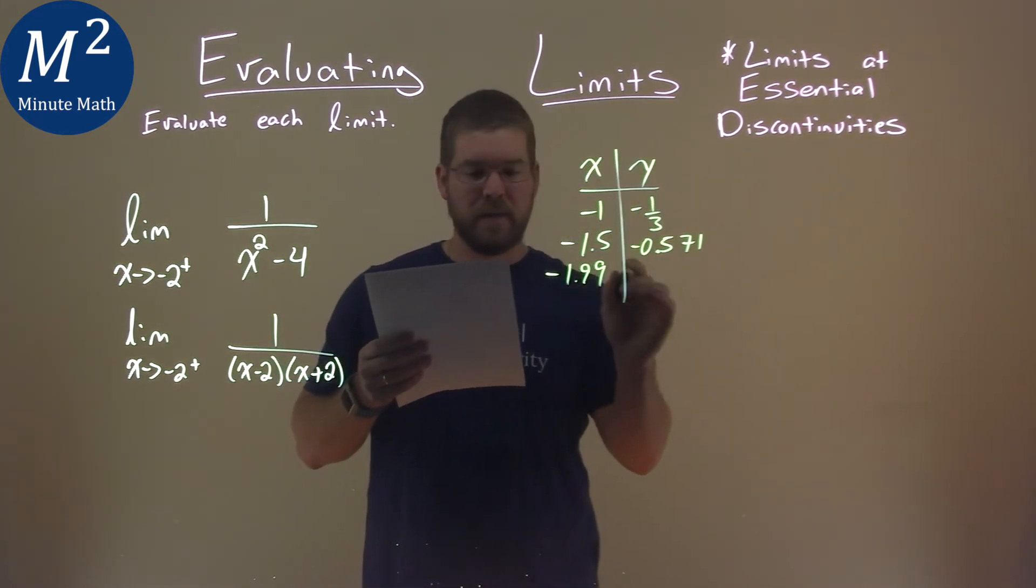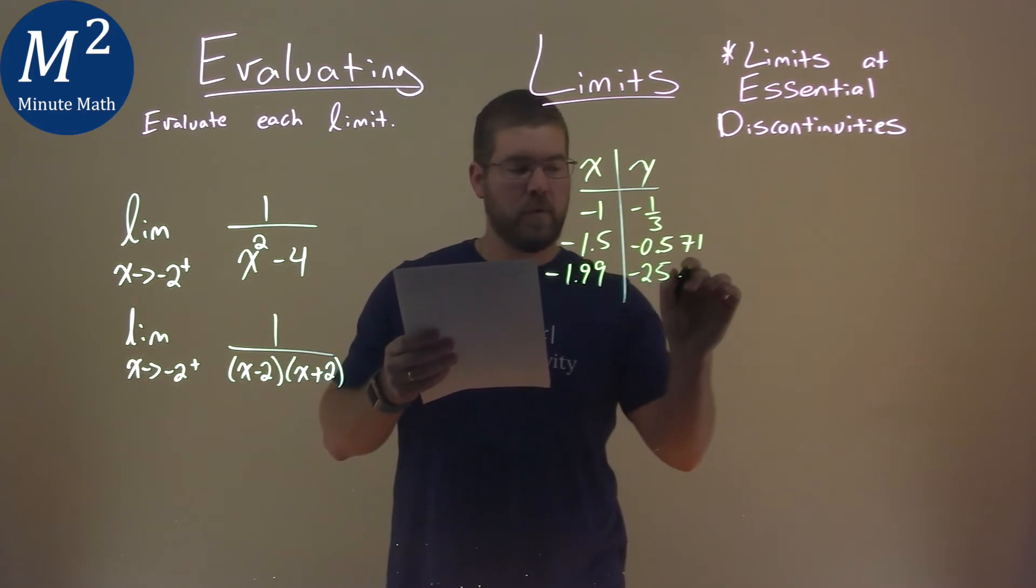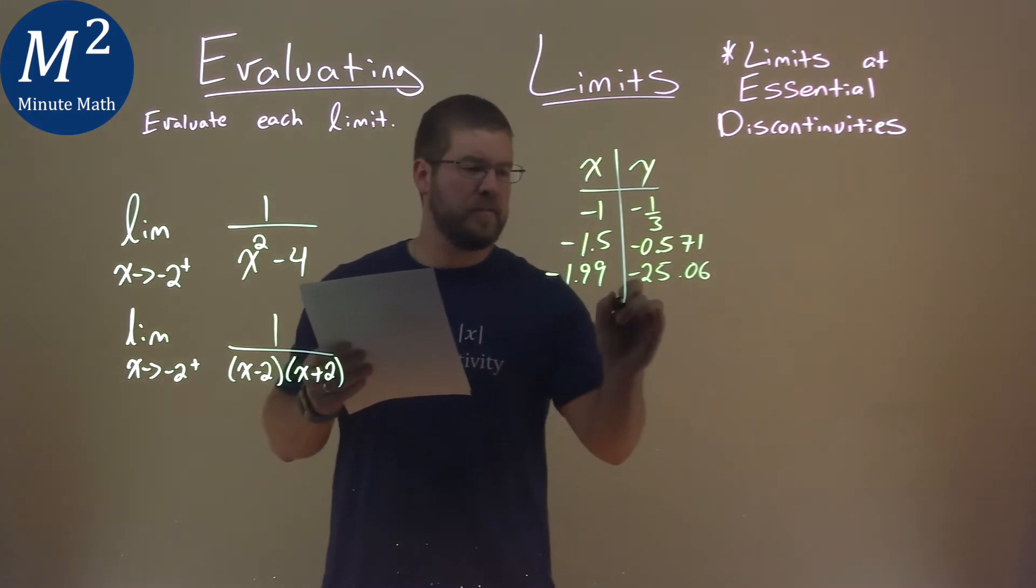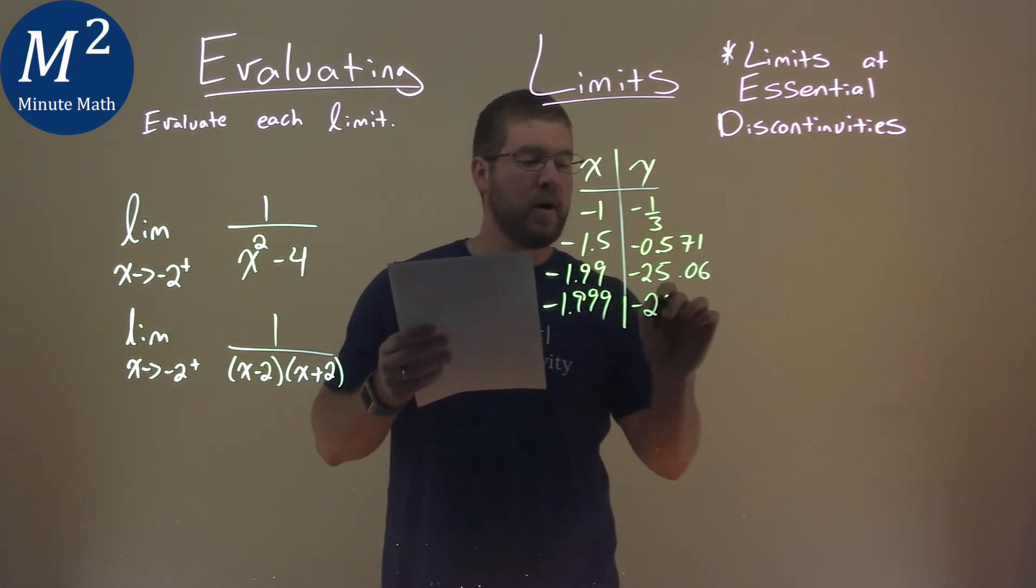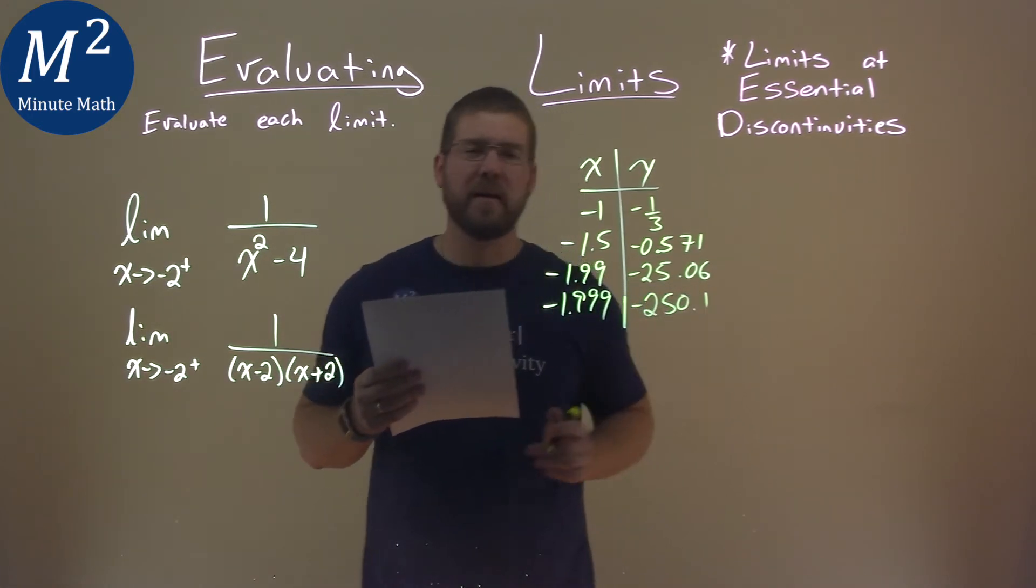A negative 1.99, we get a negative 25.06, and I used my calculator for these values. And a negative 1.999, we get a negative 250.1, and that's approximately.